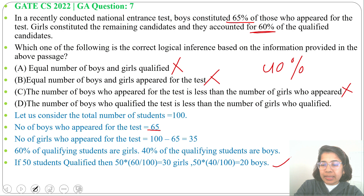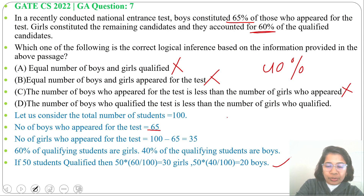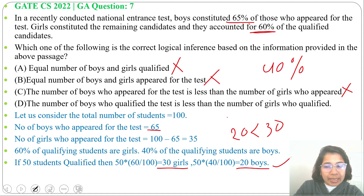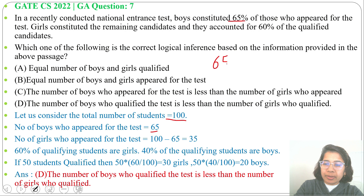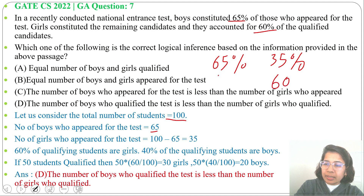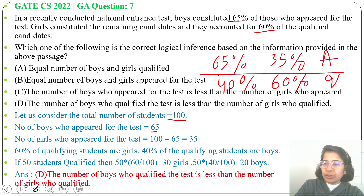Next, option D: the number of boys who qualified the test is less than the number of girls who qualified — yes, this is correct. By taking 50 students qualified, we get 20 boys qualified and 30 girls qualified, so 20 is less than 30. The number of boys who qualified is less than the number of girls who qualified. So the answer is option D. You can also verify directly from the percentages: boys appeared 65%, girls 35%; girls qualified 60%, boys qualified 40%. Answer is option D.